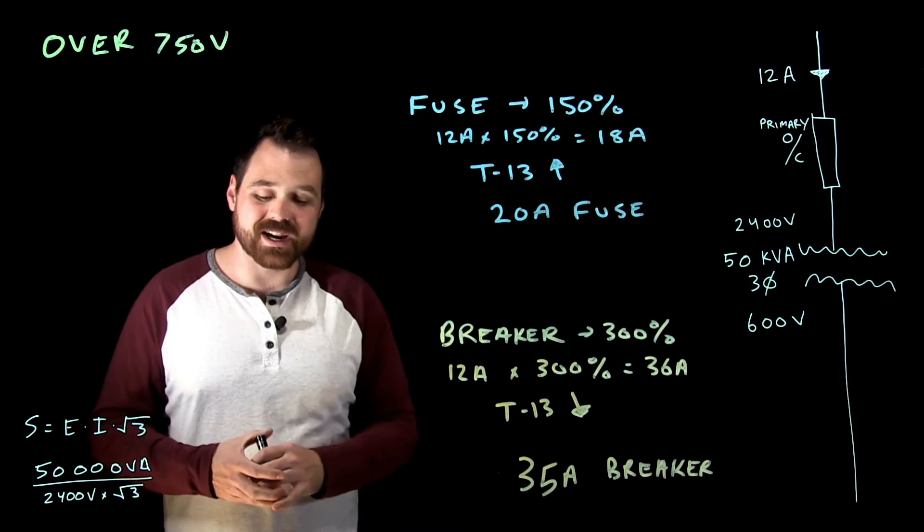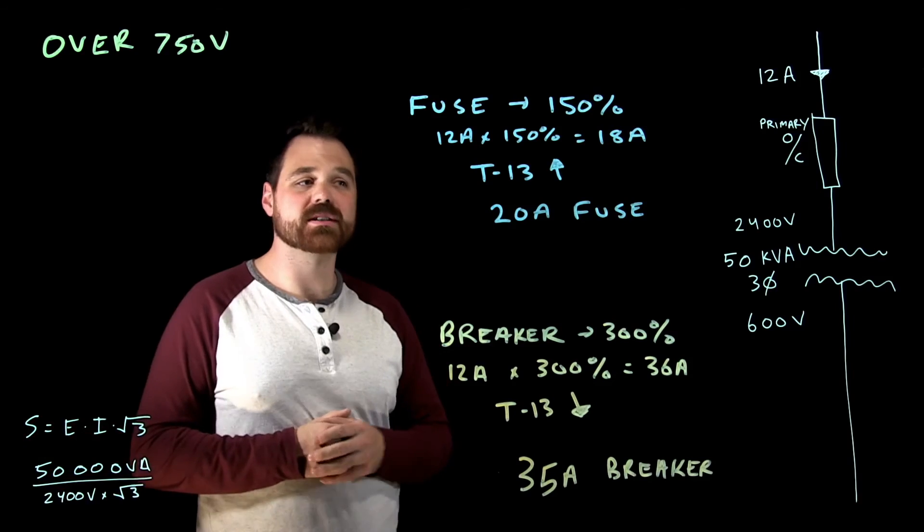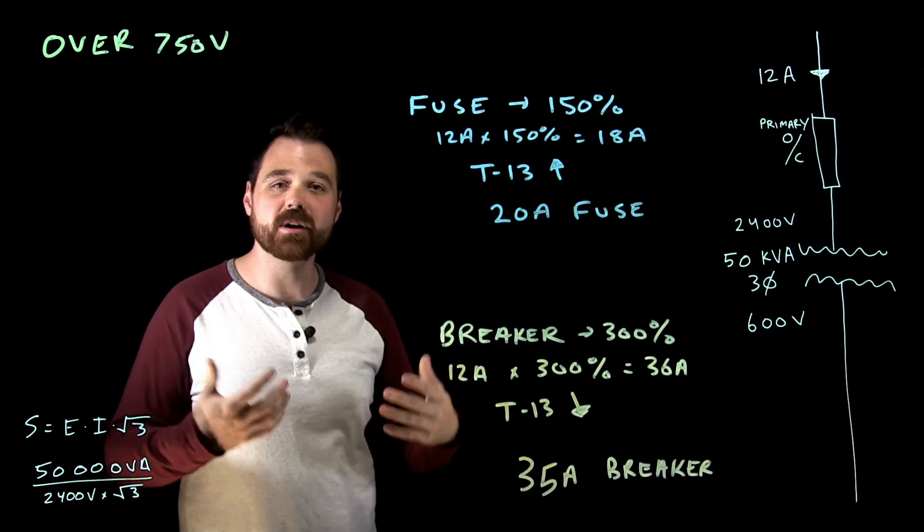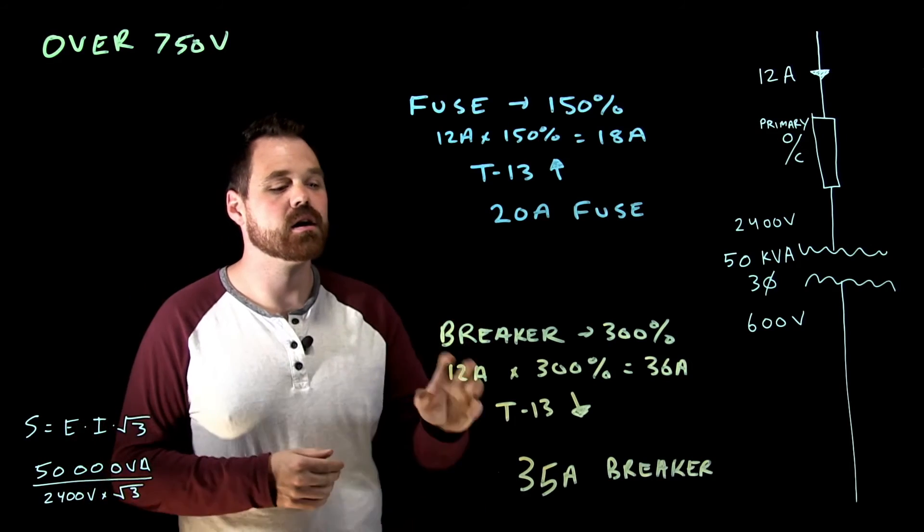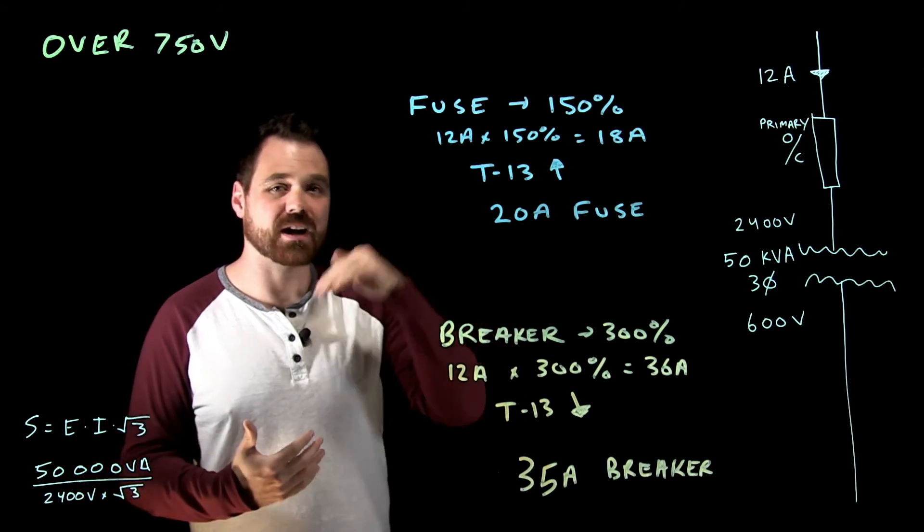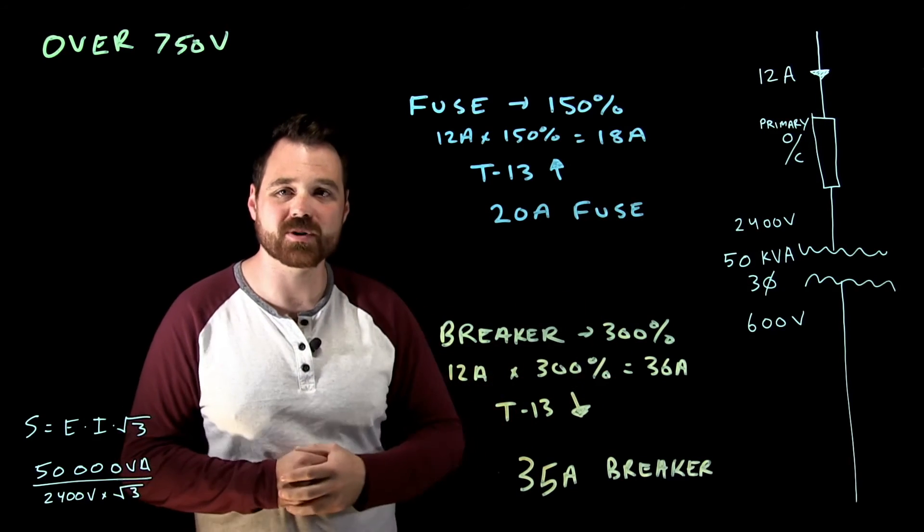So that's kind of the trick with sizing a primary overcurrent on a transformer over 750 volts. With a fuse, if that 150% is not available, I can go to the next higher size. With a circuit breaker, if that 300% is not available, I have to actually go down to a smaller size, because I cannot exceed 300%.